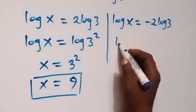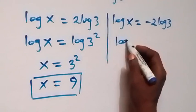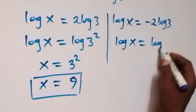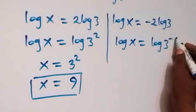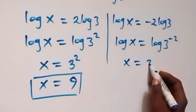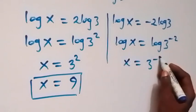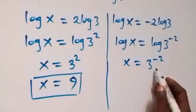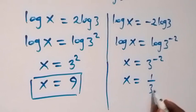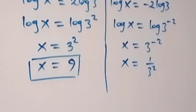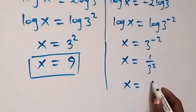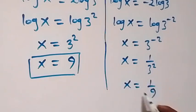For the second case, we reverse the power rule so that log x equals log 3 raised to power minus 2. The logs cancel, giving x equals 3^(−2). From the law of indices, this is the same as x equals 1 over 3^2, which is simply x equals 1 over 9.